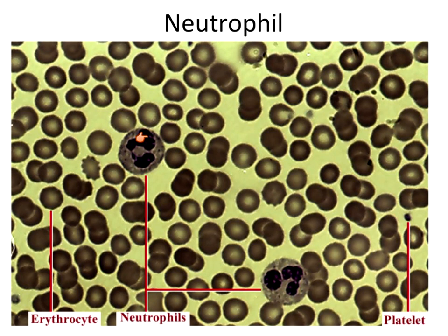That's what a differential count is. In your lab homework, there's a differential count that it asks for. Essentially, all you're going to do is comb your slide, look for each cell type, and count them out of the 100 white blood cells you find. So maybe out of those 100 white blood cells, you find 60 neutrophils — that's 60%. Then you look for eosinophils, monocytes, or whatever, to see if they are within their normal parameters.